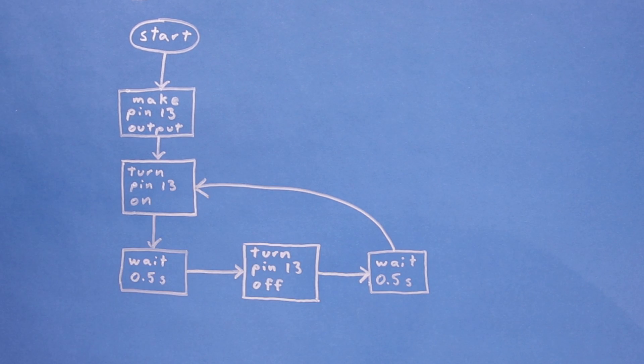We can look at our flowchart and decide where in the Arduino program our code should go. Since setting pin 13 to output happens once, that should go inside setup. And because the last four parts need to happen in order but repeat forever, they should go in the loop function.